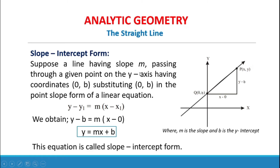Slope-intercept form: suppose a line has slope m and passes through a given point on the y-axis with coordinates (0, b). Substituting (0, b) into the point-slope form y − y₁ = m(x − x₁), we obtain y = mx + b. This equation is called the slope-intercept form, where m is the slope and b is the y-intercept — the point (0, b) along the y-axis where x = 0.